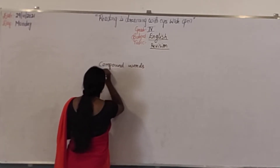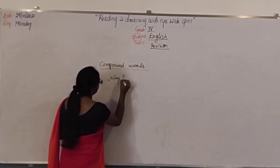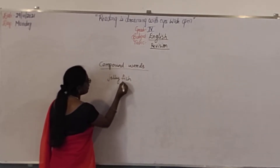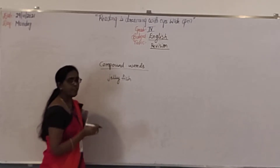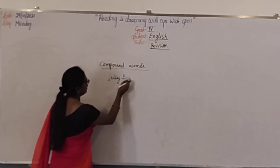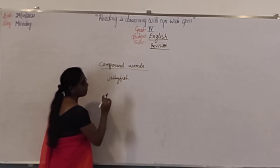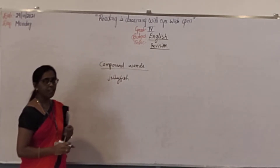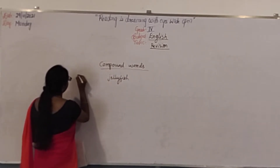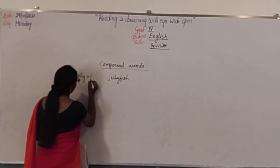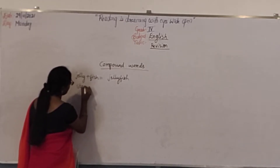Jelly is one word and fish is one more word. If you join these two words together, we form a new word — that is jellyfish. You can join them right now: it is jellyfish. This makes one word. Can you make some more words like this? Starfish. Yes. Jelly plus fish makes jellyfish. Star plus fish makes starfish.